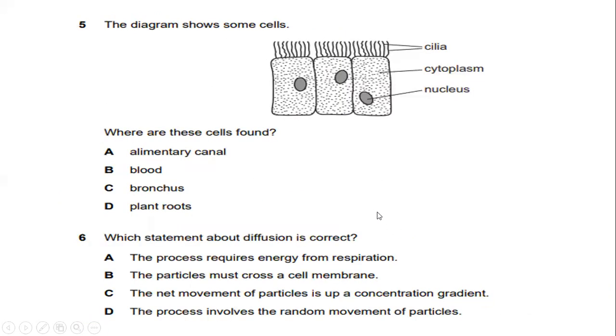The diagram shows some cells which consists of cellulose, cytoplasm and nucleus. If you can see where are these cells found? Whether it's in alimentary canal, blood, bronchus or the plant's root. The answer is C.